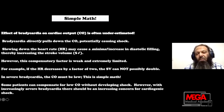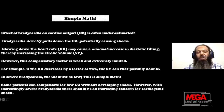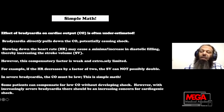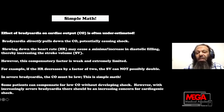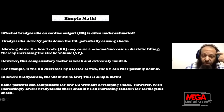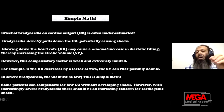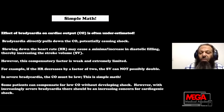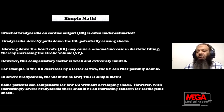With bradyarrhythmia, there is time for diastolic filling, which allows for increasing stroke volume. However, this compensatory mechanism — increasing stroke volume — is still weak and extremely limited based on cardiac function, ejection fraction, and restrictive pattern. You cannot rely most of the time on this mechanism. For example, if heart rate decreases by a factor of two, the stroke volume will not double to compensate. There is no proper matching between stroke volume rise and heart rate decrease.